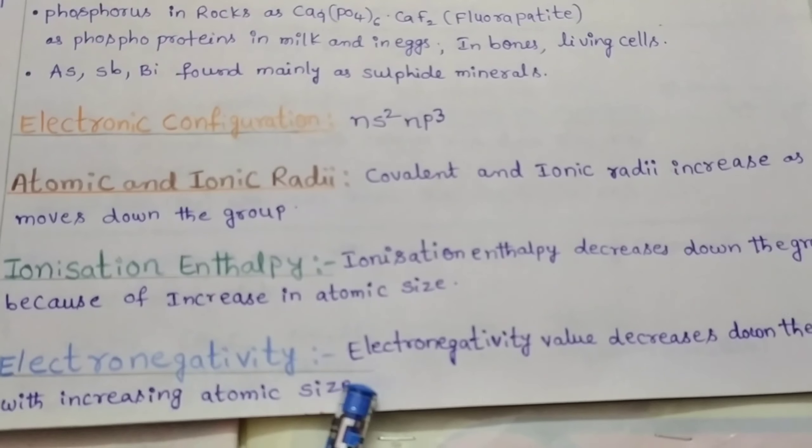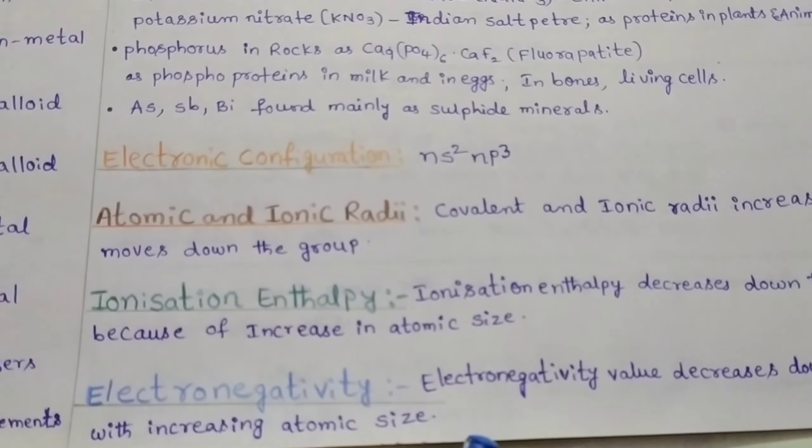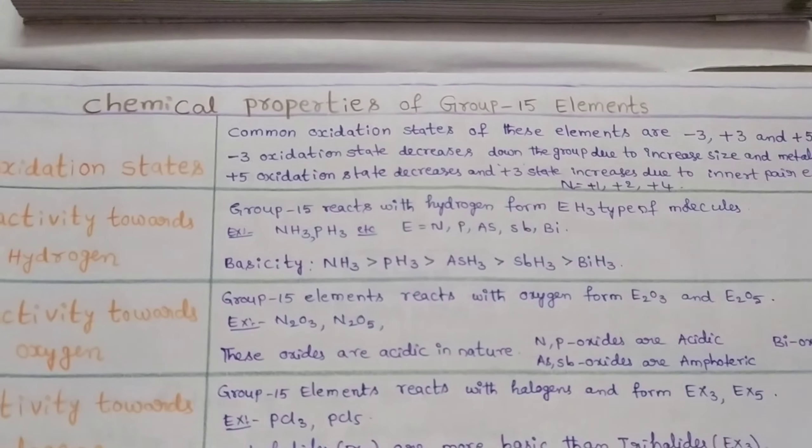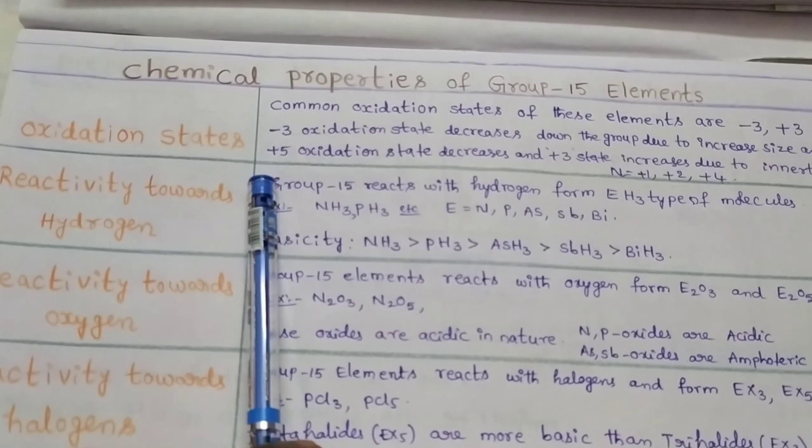Electronegativity. Electronegativity value decreases down the group with the increasing of atomic size. Now we discuss the chemical properties of group 15 elements. First, oxidation state.